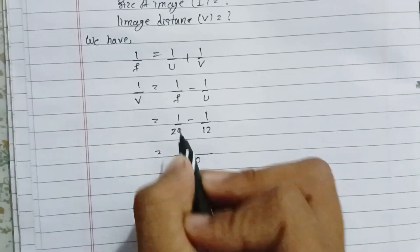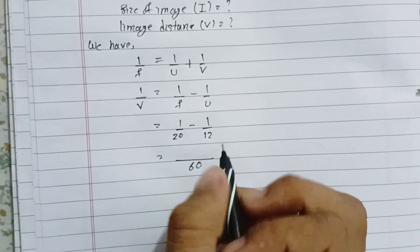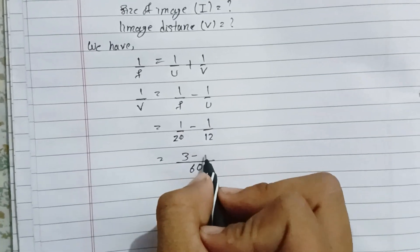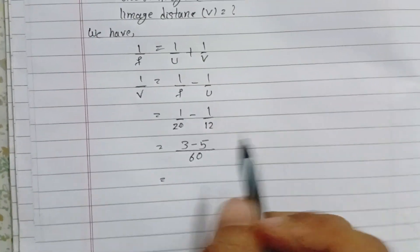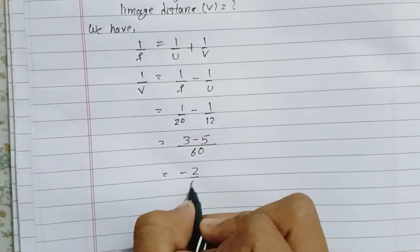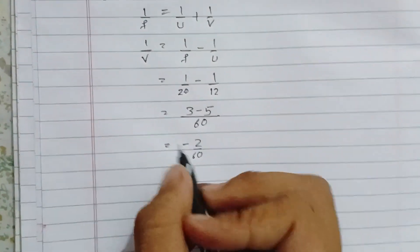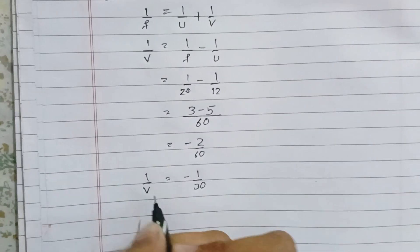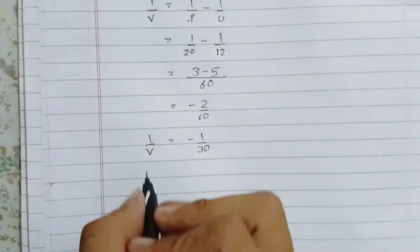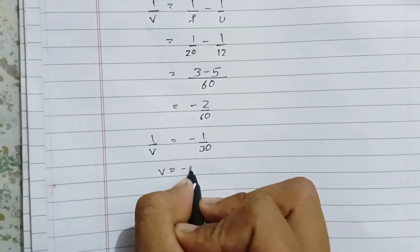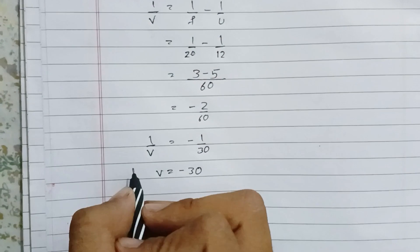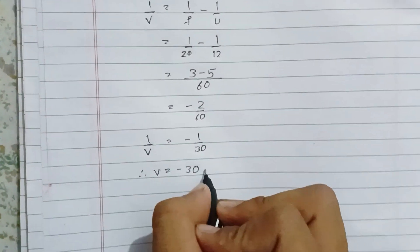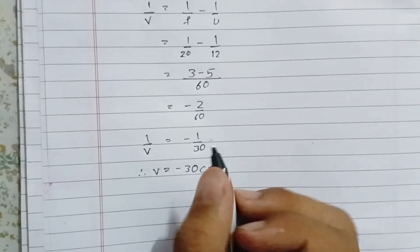Taking LCM of 60: 3 minus 5 over 60 equals -2 by 60 equals -1 by 30. So 1 by v equals -1 by 30, therefore v equals -30 cm.